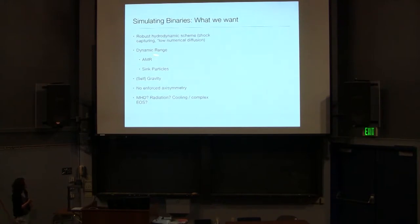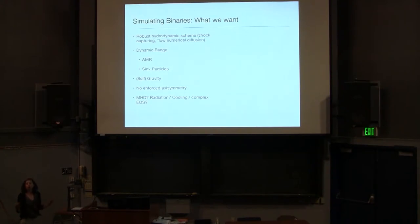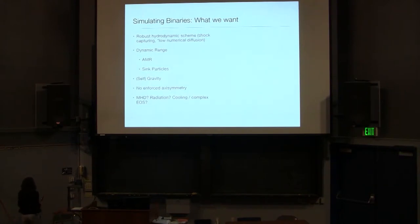A problem that makes binary formation particularly challenging numerically is that we can't enforce axisymmetry. If you're simulating one star or a black hole in a galaxy, there's an obvious center of mass and you can choose a grid geometry that takes advantage of that — for example, a cylindrical grid. If you're simulating one star and a disk, there's an obvious axis of symmetry. As soon as you add a binary, you've removed that axis of symmetry — you have two dominant centers of mass. And so that's one thing that makes it a more challenging problem.